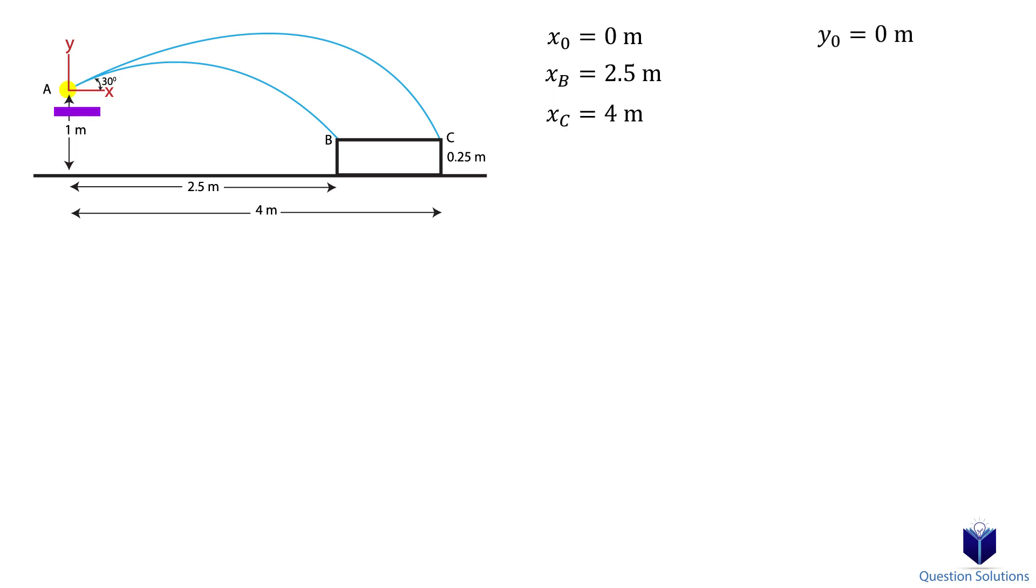The final location yB is at negative 0.75 meters. It's 1 meter minus 0.25 meters as the toy hits the edge of the pool, which is 0.25 meters above the ground level. The other location yC is also negative 0.75 meters. Let's not forget acceleration which is downwards, so negative 9.81 meters per second squared.